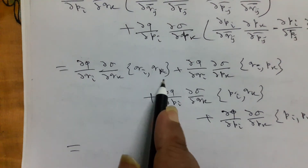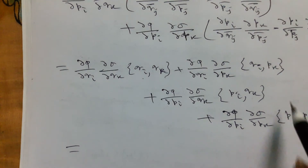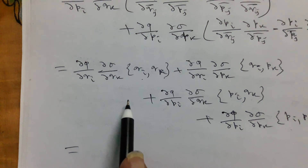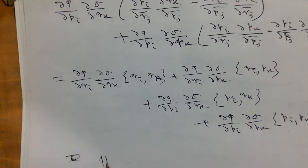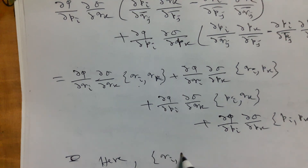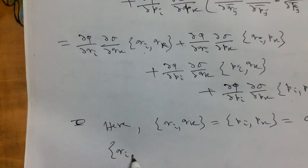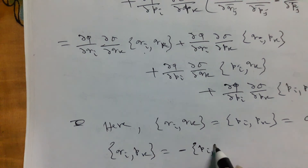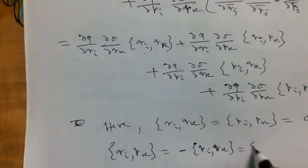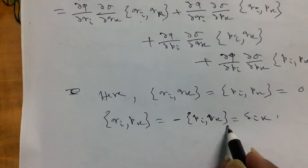We find all terms, but the first and last terms will be zero. Here {qᵢ,qₖ} = 0 and {pᵢ,pₖ} = 0, so those terms vanish. And {qᵢ,pₖ} equals minus {pᵢ,qₖ}, which equals δᵢₖ — this is the property of antisymmetry.